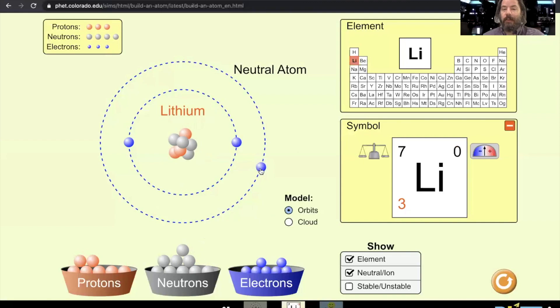So notice this electron went to another ring, and there's all kinds of rules on that, but the first ring only holds two, second ring only holds eight, third ring can hold up to 18, and it can be quite a bit more complicated after that.